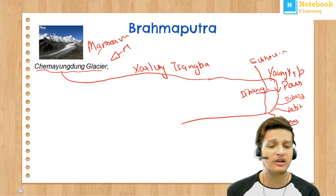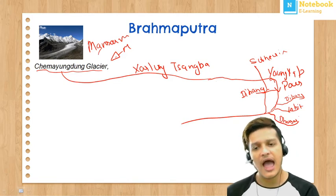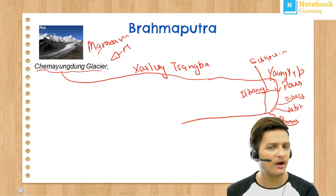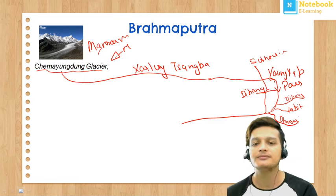That's all about the tributaries of the Brahmaputra River System. We will come up with the Peninsular rivers in the next video lesson. Thank you.